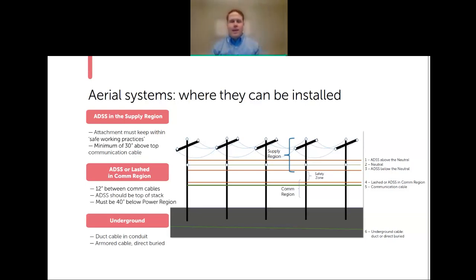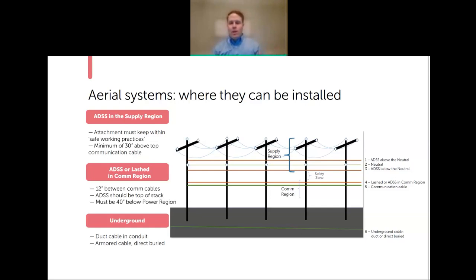The more specific question is: do we want ADSS in the supply region, or a strand and lash approach in the communication zone? Supply cable can go above, in, or below the neutral, staying about 30 inches on top of the communication cable. The communication zone must be at minimum 40 inches below the power region. In the comm zone, 12 inches of space must be kept between each cable.